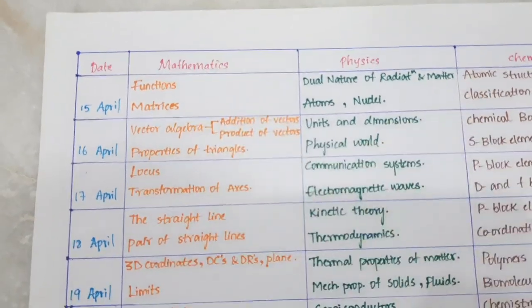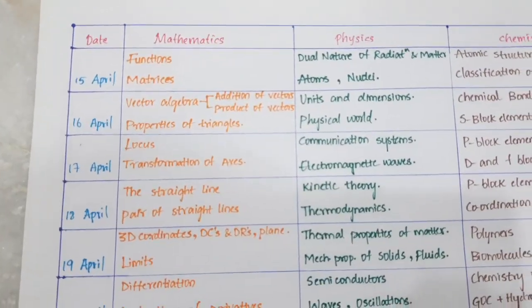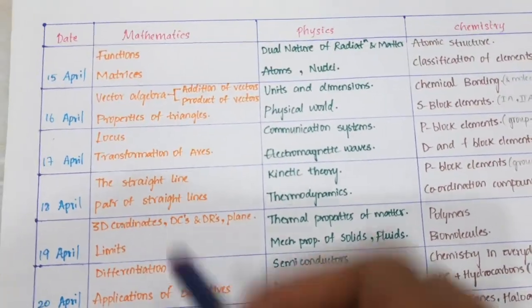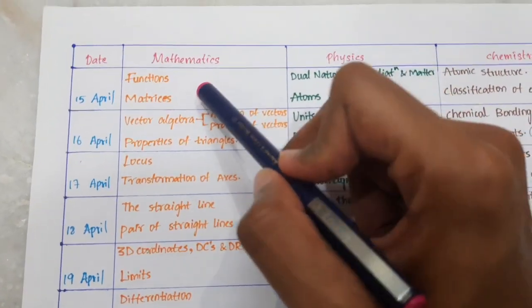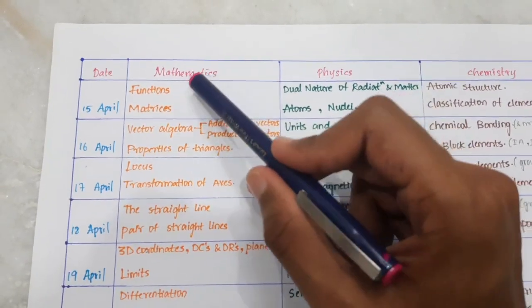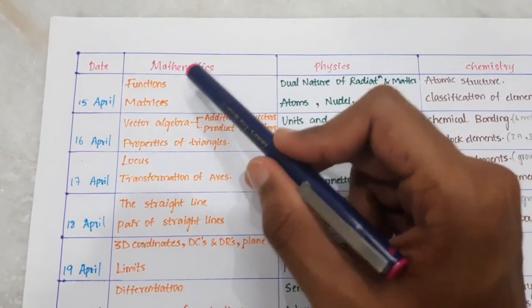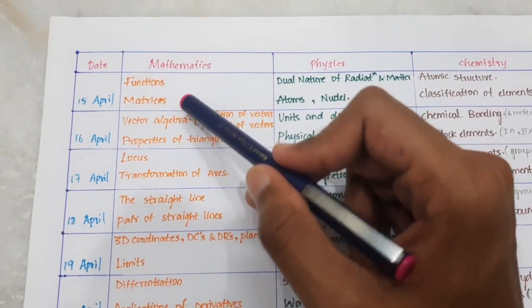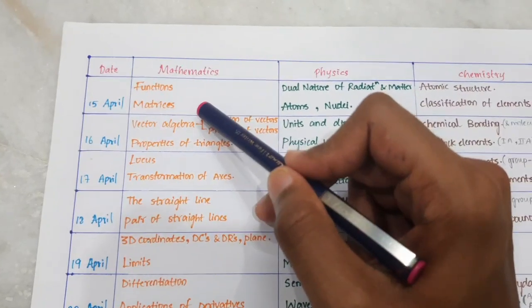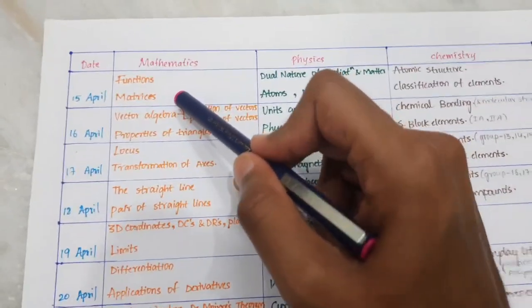Now let's start with mathematics. My timetable runs April 15th to April 30th — each day covering 2 chapters of maths, 2 chapters of physics, and 2 chapters of chemistry. Day 1: Functions and Matrices — functions types, domain, ranges, and matrices multiplication.